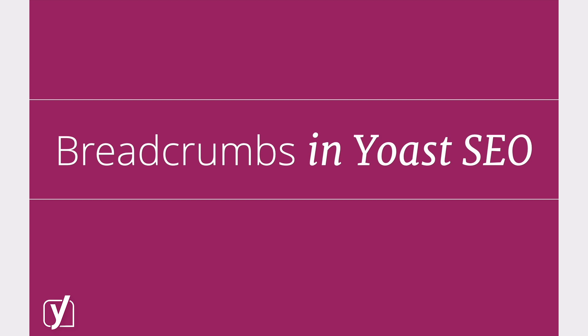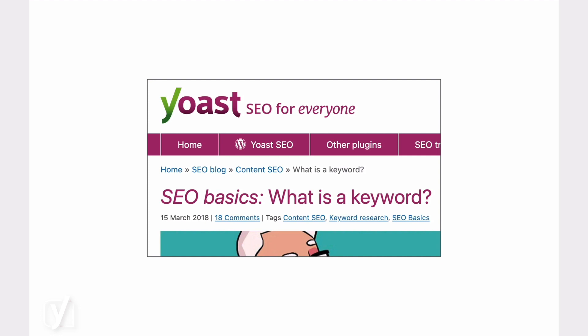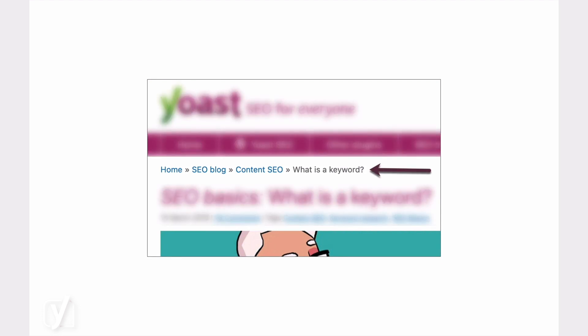With Yoast SEO, you can easily add breadcrumbs to individual posts and pages in the WordPress blog editor. That means that the breadcrumbs will be visible only on the post or page you add the block to. If you want the breadcrumbs to appear site-wide, you'll need to add them to your theme's code.